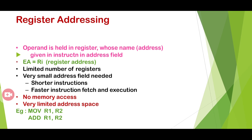In register addressing mode, the operand values are held in registers whose names are given in the instruction's address field. Examples: MOVE R1, R2 or ADD R1, R2. This is a shorter instruction with no memory access since register names are directly specified. However, there is a limitation due to the limited number of registers. It provides faster instruction fetch and execution but with very limited address space.